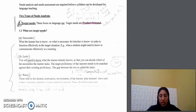The target proficiency of the learners needs to be matched against their existing proficiency. The gap between the two is called the lacks. So number two, lacks, that means what he lacks to learn. So we know what is necessary, but now we want to see what he lacks.